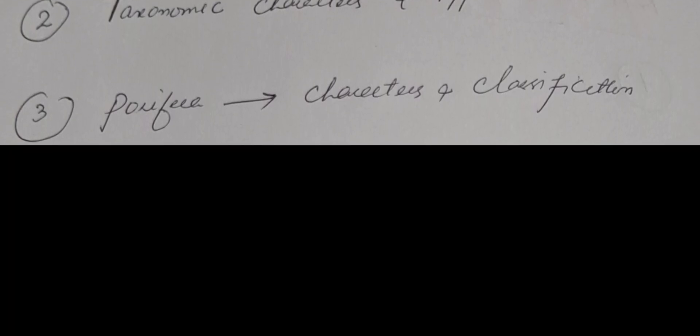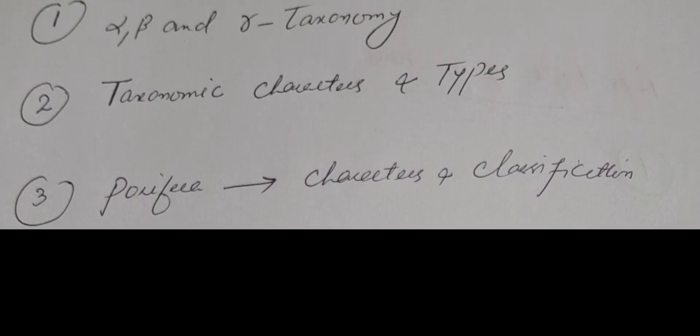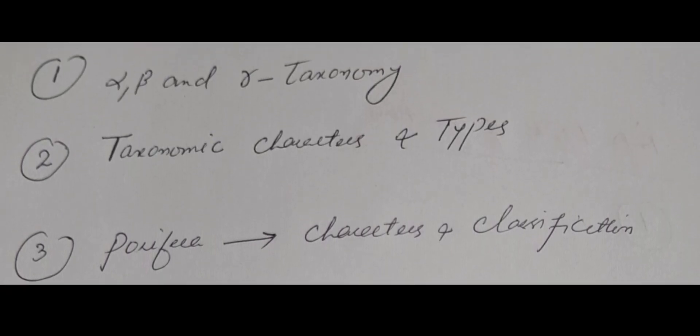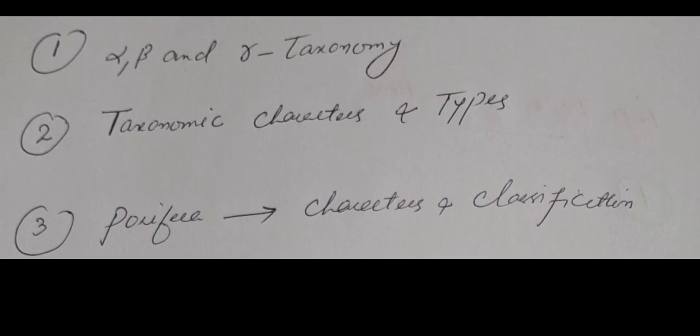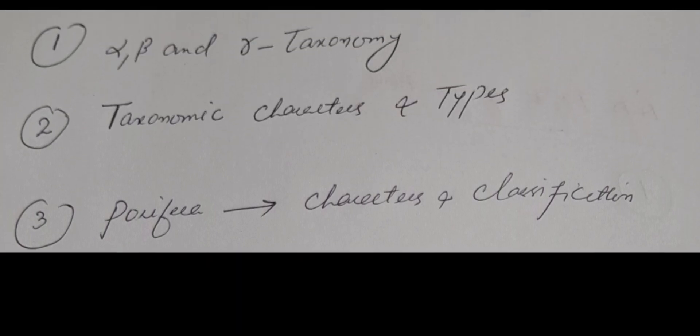The first question is alpha, beta, and gamma taxonomy. Then we have taxonomy characters and types. Third is porphyra characters and classification. Fourth question is polymorphism in cnidarians. Fifth is a brief account on the canal system of porphyra. Sixth question is the life cycle and pathogenicity of Taenia solium.